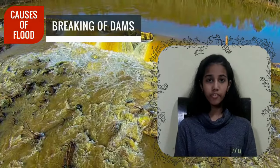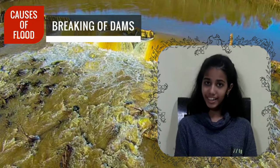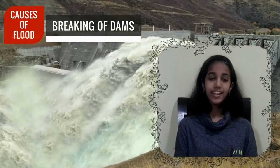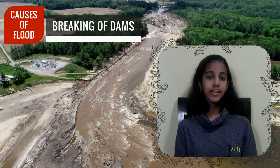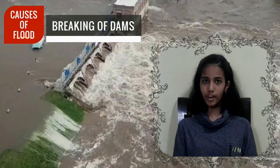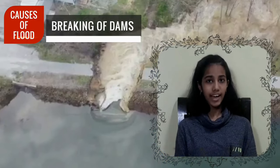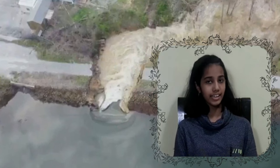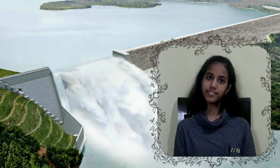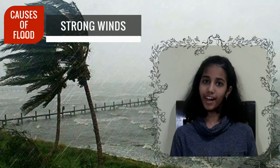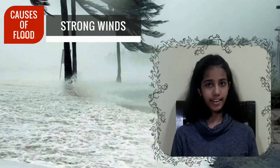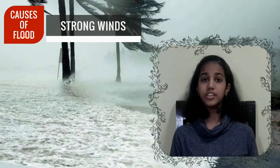Breaking of dams. When there is too much water behind the dams, the force of the water breaks it. This causes overflowing of water and thus results in flooding. Strong winds — when sea water is carried by strong winds or hurricanes to the dry coastal area, it results in flooding.